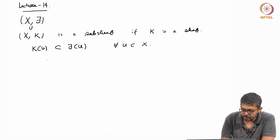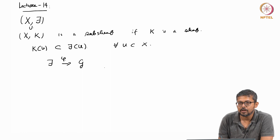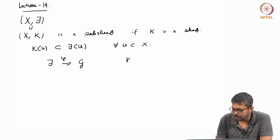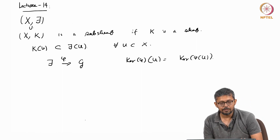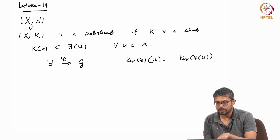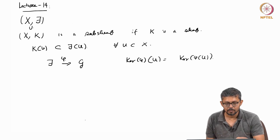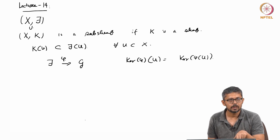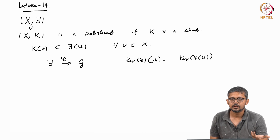How do you get a sub-shift? If you have a shift homomorphism phi, then the kernel of phi at u is nothing but the kernel of phi of u. Because phi is a shift, this kernel of phi of u will be a sub-shift — the shift property will induce a shift property on the kernel. So the kernel of any shift homomorphism is always a shift.